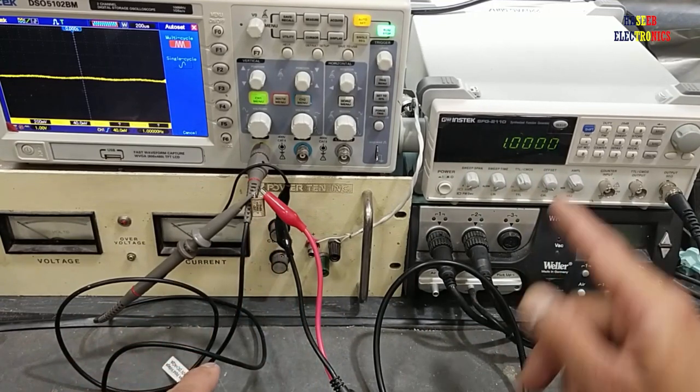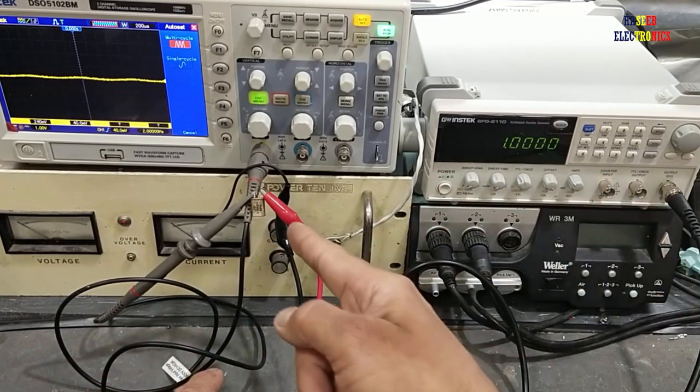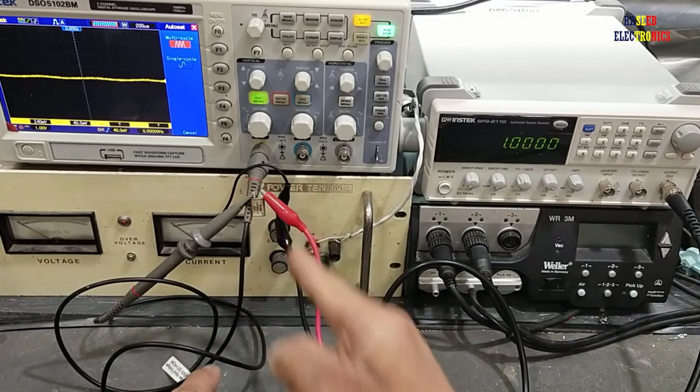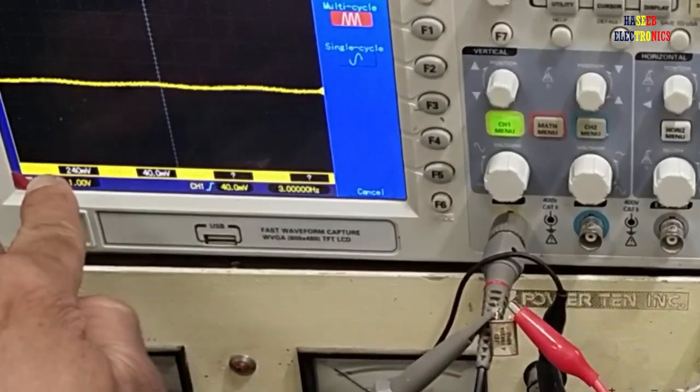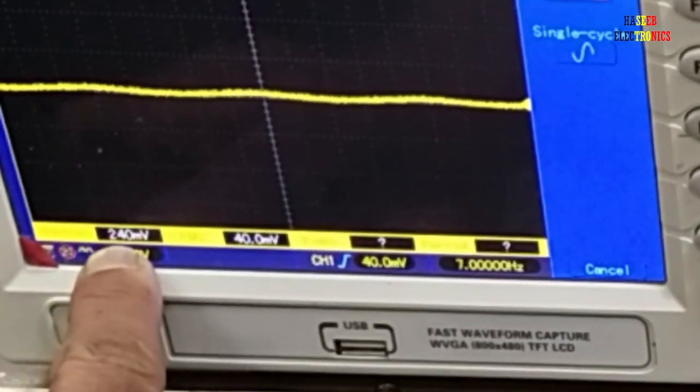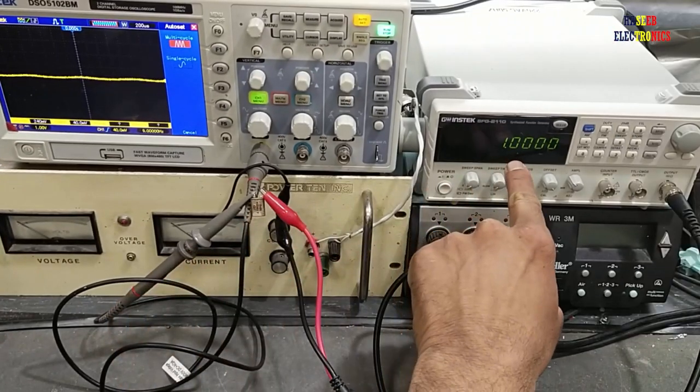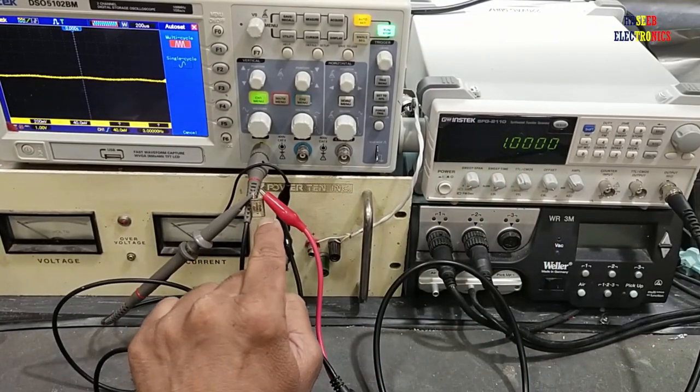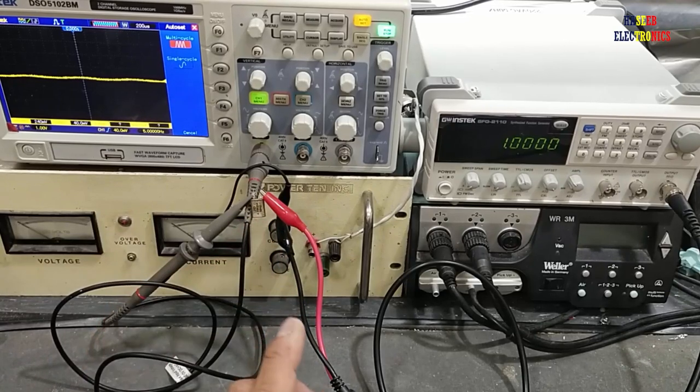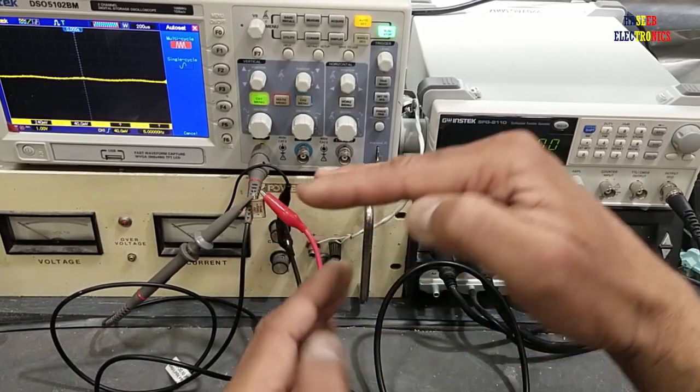We applied a 5-volt signal in series connection to this crystal oscillator, but now it is only 240 millivolts. Why? Because we are applying 1 kilohertz and the crystal is 4.193 megahertz, so this crystal oscillator is damping the signal.